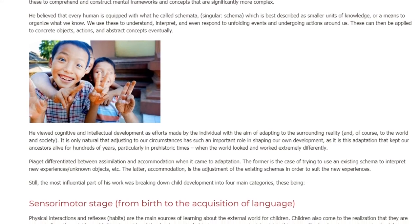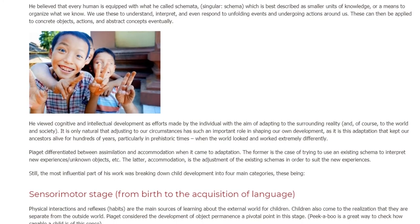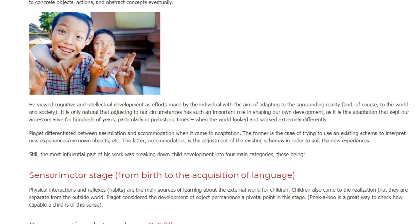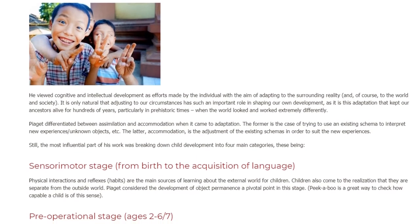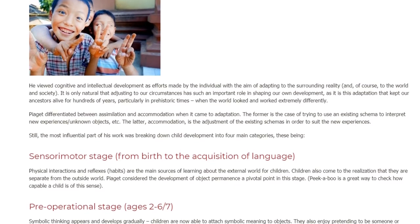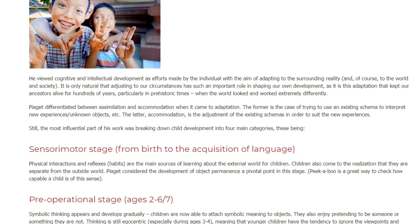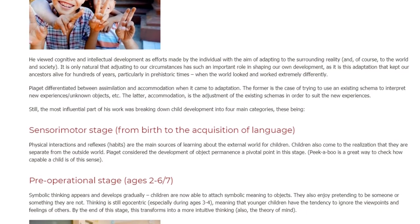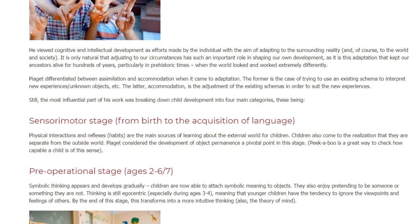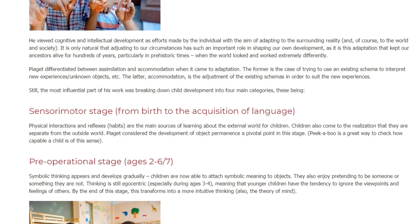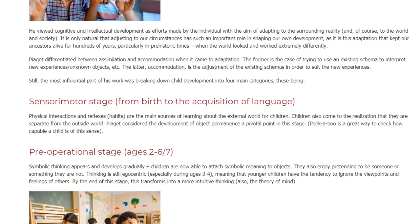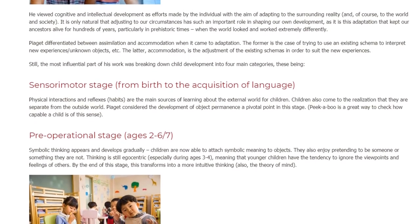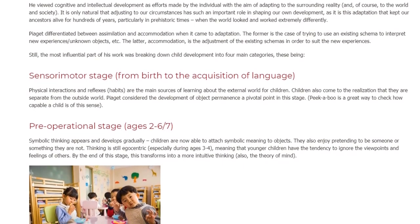Piaget differentiated between assimilation and accommodation when it came to adaptation. The former is the case of trying to use an existing schema to interpret new experiences or unknown objects. The latter, accommodation, is the adjustment of existing schemas in order to suit new experiences. The most influential part of his work was breaking down child development into four main categories. The first is the Sensory-motor stage, from birth to the acquisition of language. Physical interactions and reflexes and habits are the main sources of learning about the external world. Children also come to realize they are separate from the outside world, and Piaget considered the development of object permanence a pivotal point in this stage — peekaboo being a great way to check how capable a child is of this sense.